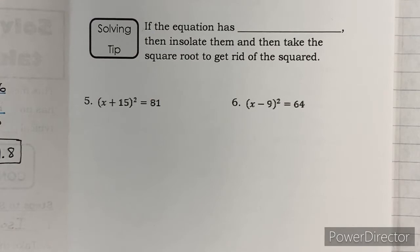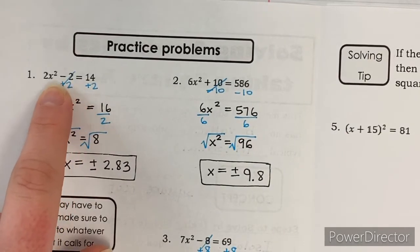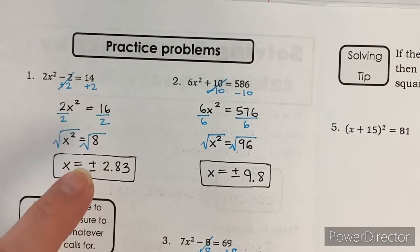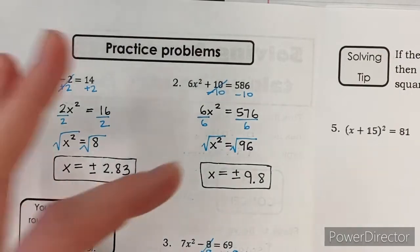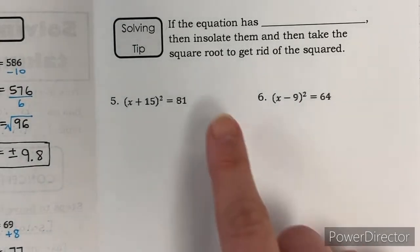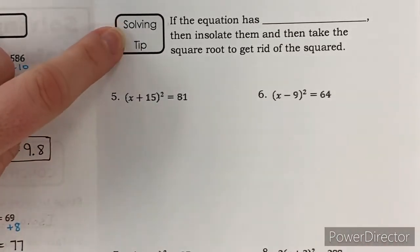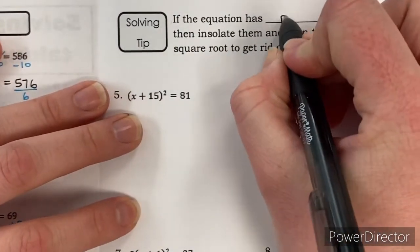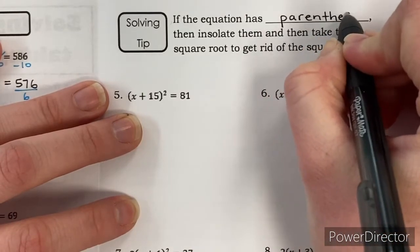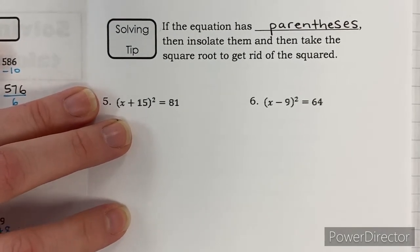I have one more set of practice problems. These look slightly different — they are equations missing the b value, with no x by itself, just the x squared term and a number. That's a good indicator that taking square roots is a good method. Also, when you see problems with parentheses, they don't look like typical trinomials. The solving tip: if the equation has parentheses, isolate them and then take the square root to get rid of the square.